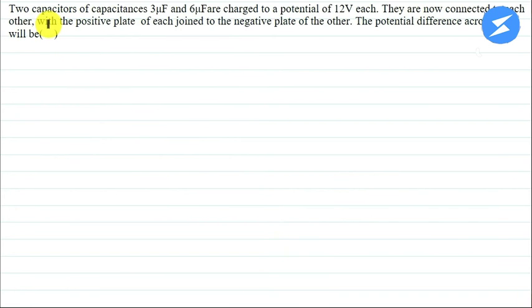Hello everyone, I am UTK. For this question, let me explain it now. The question says that two capacitors of capacitances 3μF and 6μF are charged to a potential of 12V each. They are now connected to each other, with the positive plate of each joined to the negative plate of the other.